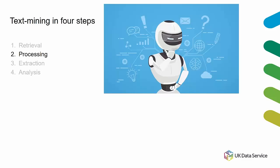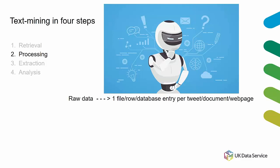The next step is processing — a set of practical steps that turn your potentially quite messy raw data into something a computer can read and work with. You can in theory do this manually, but if you're working with any kind of volume you will want to use computational tools. There are very good off-the-shelf tools in R or Python that you can use and adapt. Practical steps include dividing and renaming files — taking your raw download and cutting it into documents, perhaps one per web page, one per newspaper article, or one row per tweet.